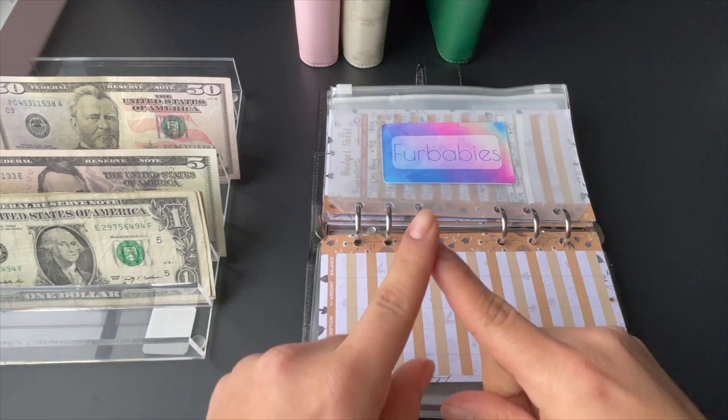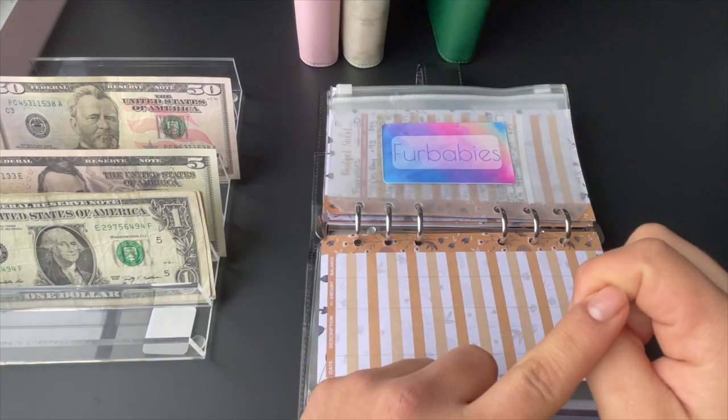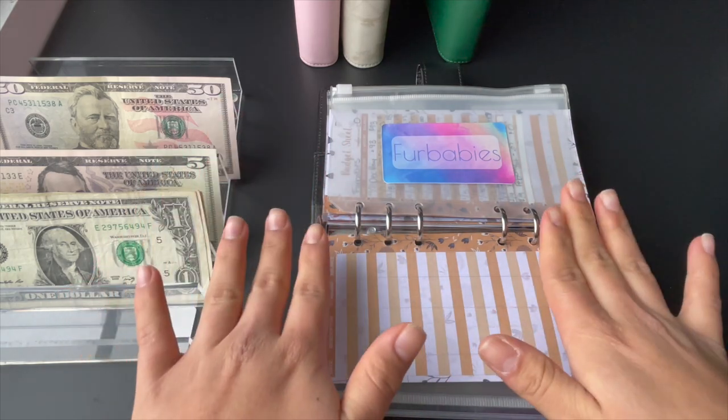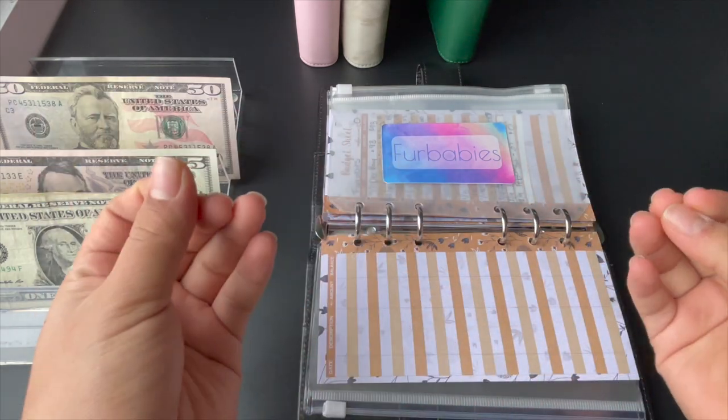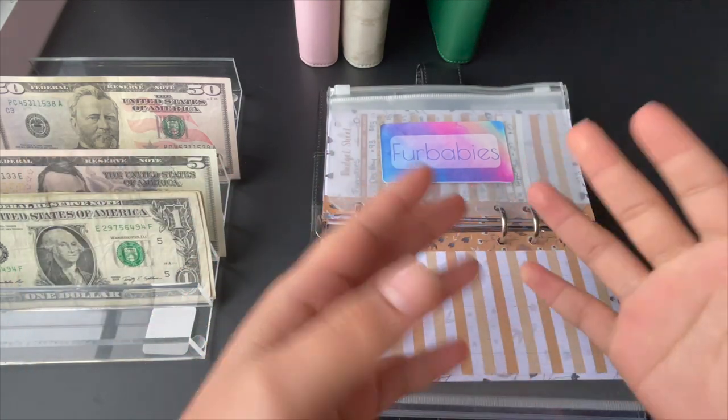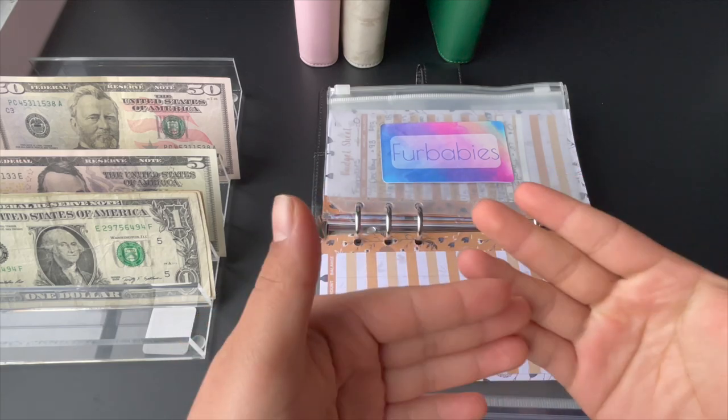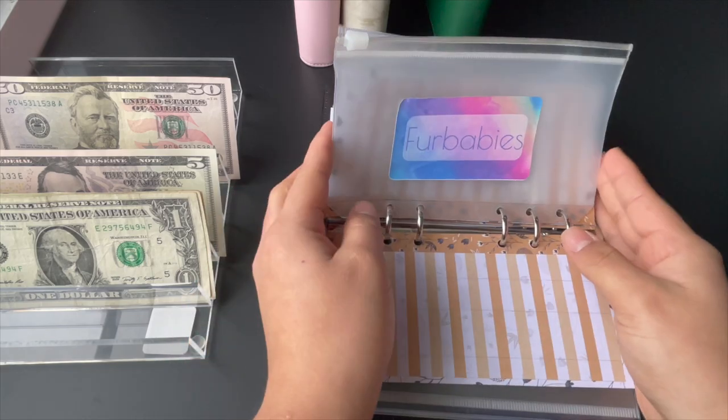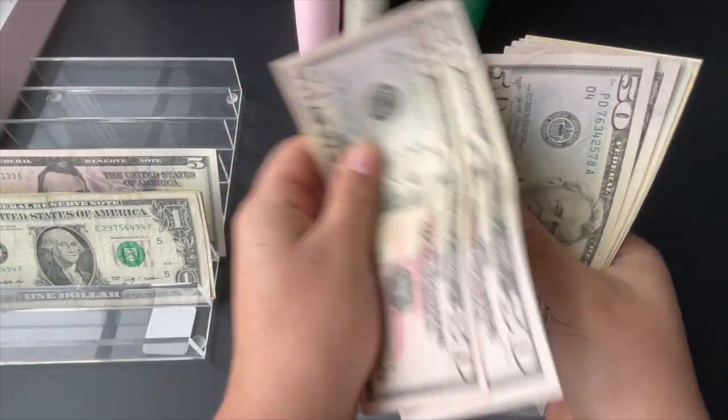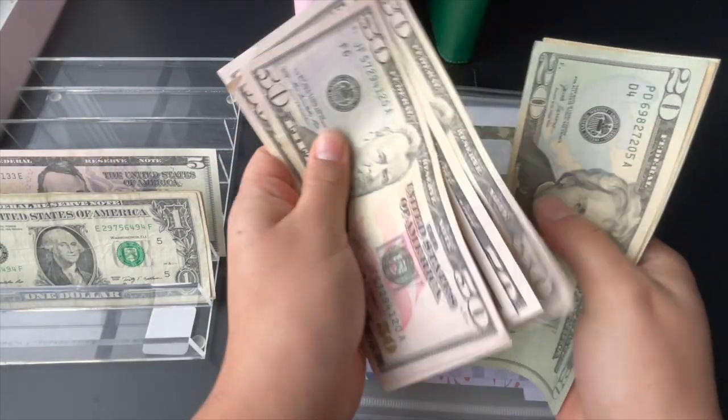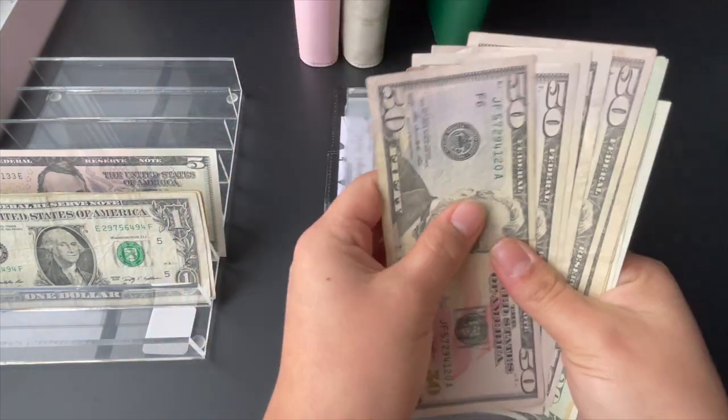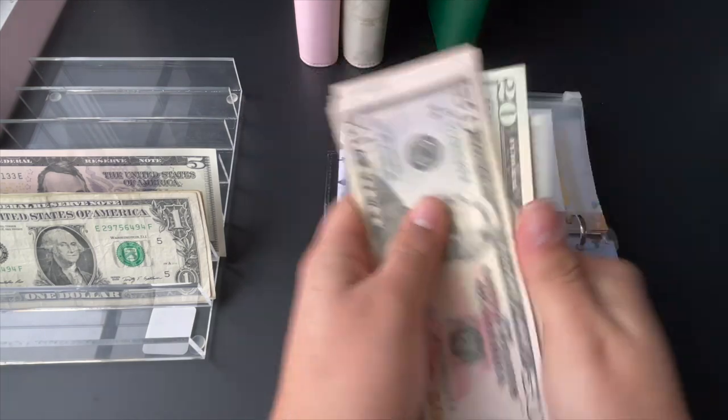I do want to get Bookie into the Bark Box subscription again so he could get toys. For his first year of him being with us, I purchased like the whole year and then I ended it once the year finished. I kind of do miss it because he always had toys all the time and I didn't really have to run out to the store and get any toys. Rent is getting... one-fifty, one fifty-two, fifty, seventy, eighty, eighty-one, eighty-two, two eighty-two.